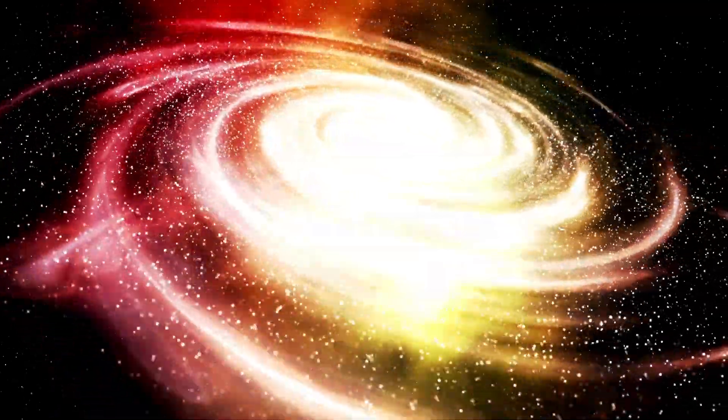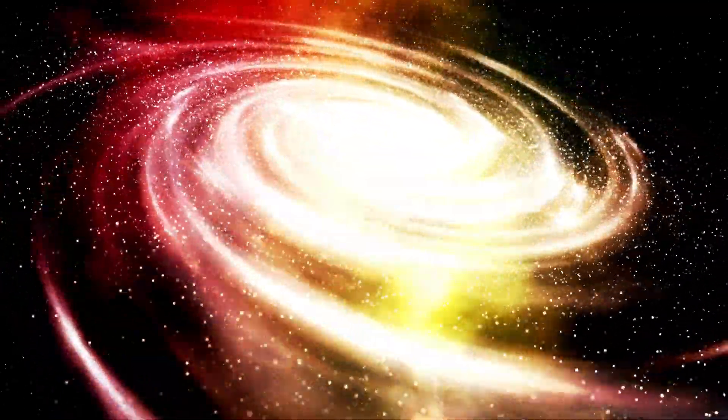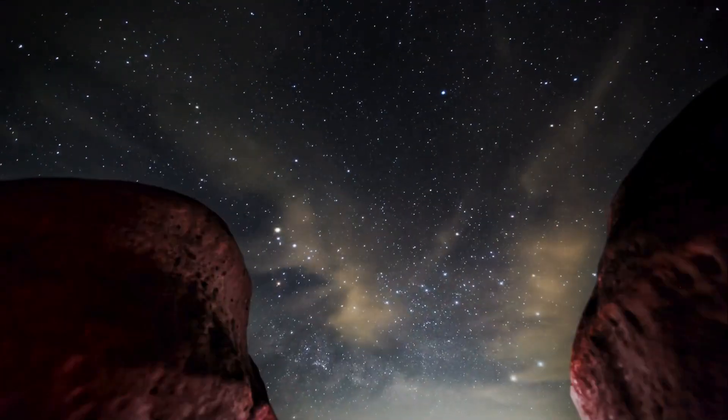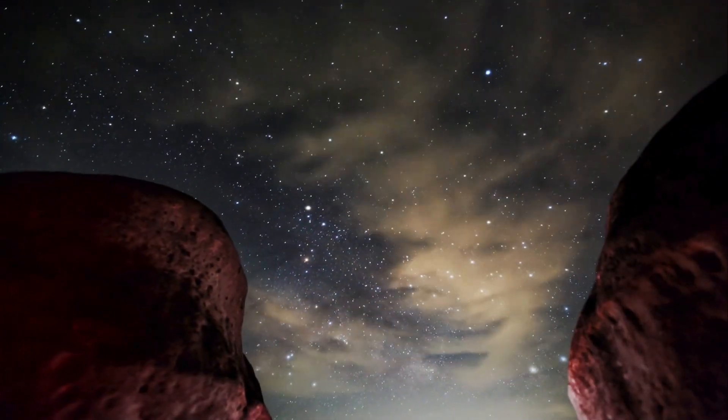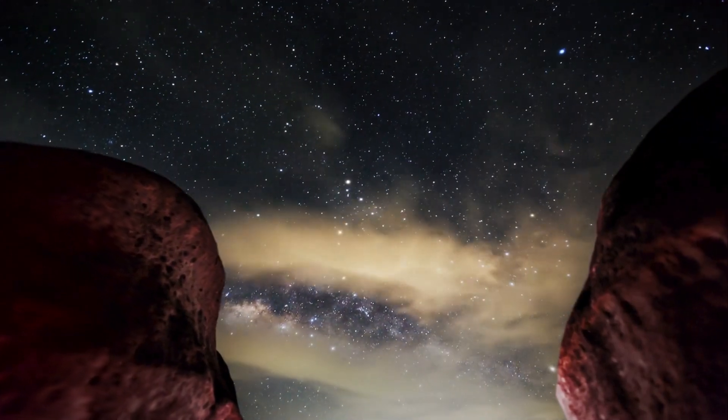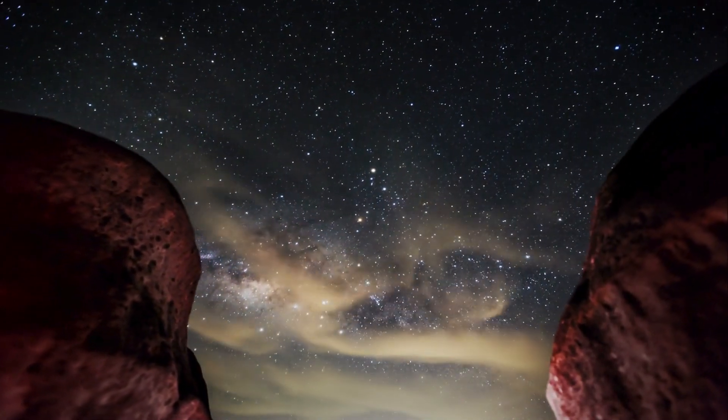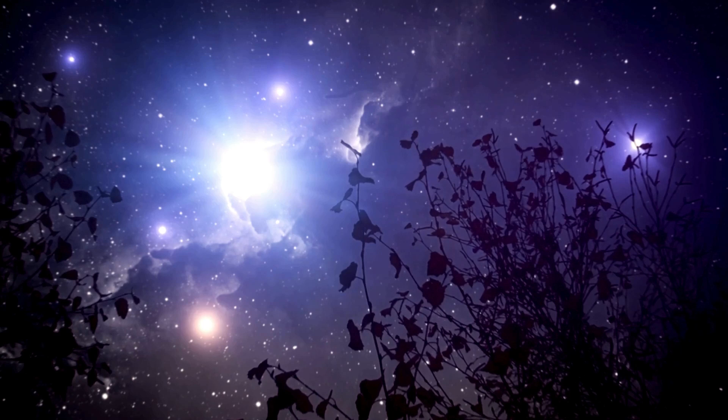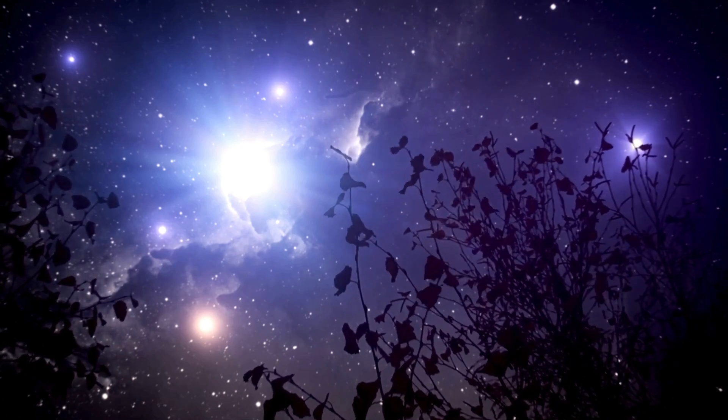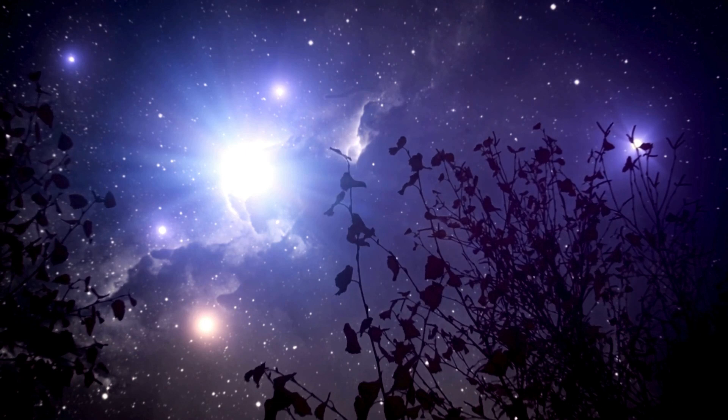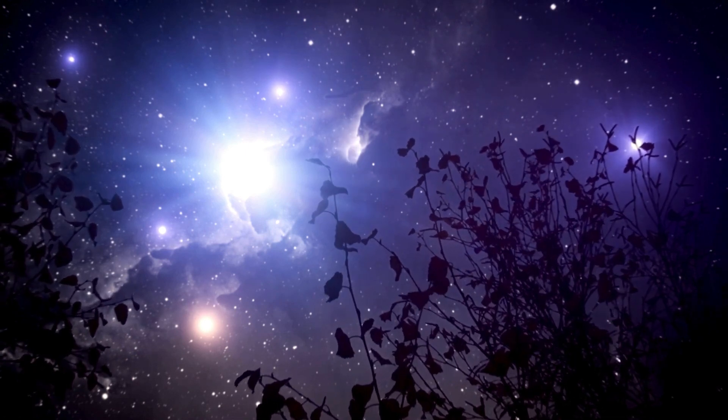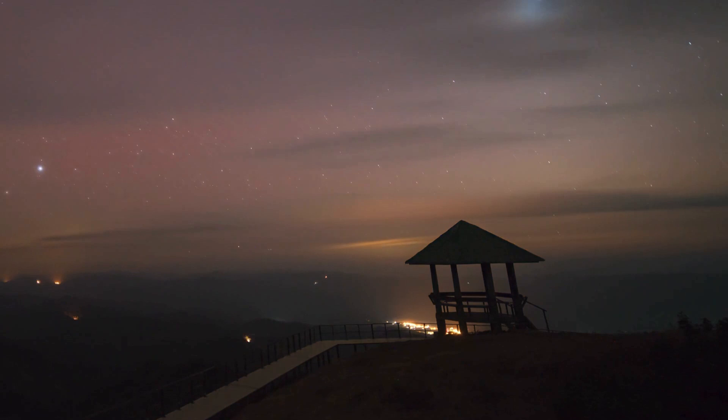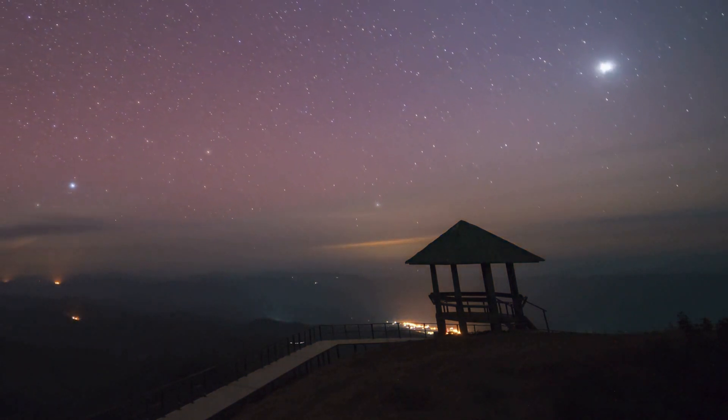Could auroras be the only positive aspect we experience here on Earth? Perhaps one of the most striking impacts of increased solar activity is the enhancement of these magnificent lights. These natural light displays, known as the northern and southern lights, occur when charged particles from the Sun interact with Earth's magnetic field and atmosphere. During times of high solar activity, auroras become more frequent and can be visible at lower latitudes, offering dramatic nighttime shows.